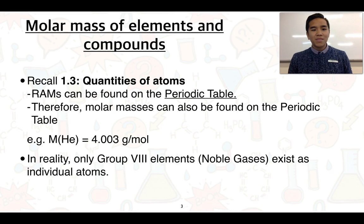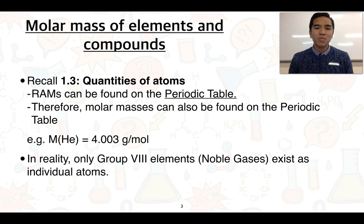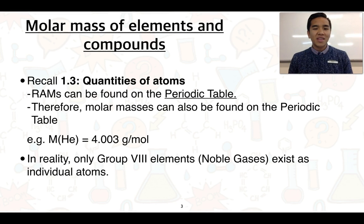To take you back a moment, we can recall this from 1.3 on quantities of atoms: if we want to work out the relative atomic mass for an element, we can simply find that on the periodic table. And we know that this directly corresponds to the molar mass. So for example, carbon has a relative atomic mass of 12.01 amu, and we can also say that the molar mass of carbon is 12.01 grams per mole.